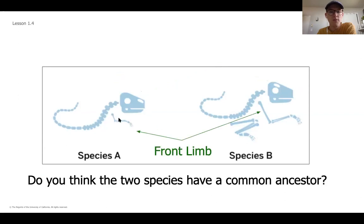They both have front limbs. Remember, limbs are a general term we use for arms or flippers or legs. All of those are considered limbs. Another thing that they have in common is that they both have a backbone. They both have a tail. But then the thing that species A is missing that species B has is its back limb.